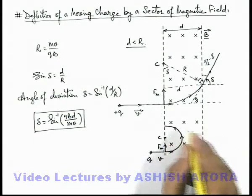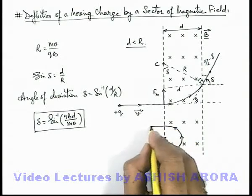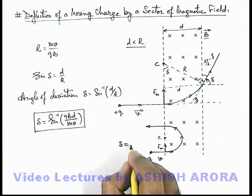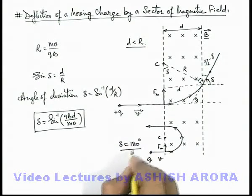We can see here it'll not be able to reach the other boundary, it'll come back in the same direction. So here deviation angle will be equal to 180 degrees or π radians.